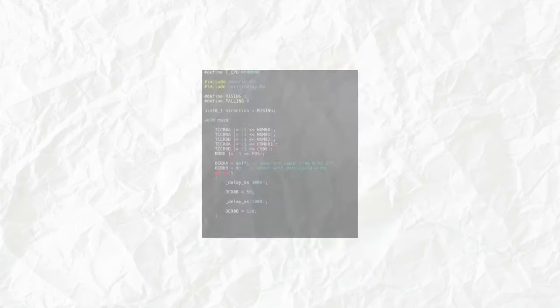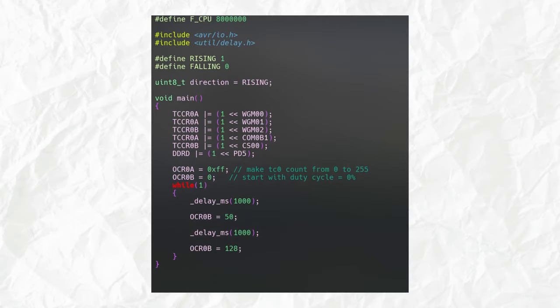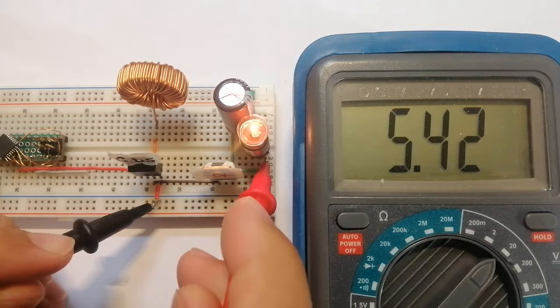To vary our duty cycle, we just have to write values between 0 and 255 in the output compare register B and we can do this in our infinite loop and we can see that periodically the output voltage changes.